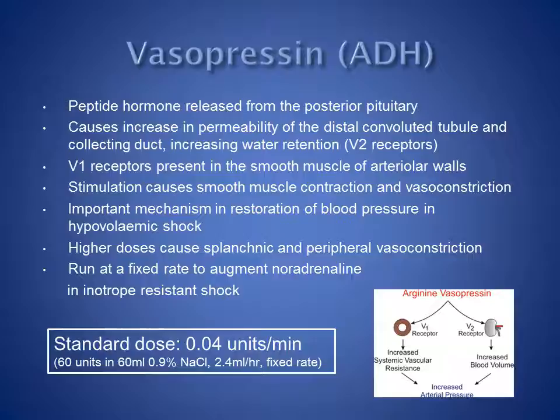Vasopressin is an important mediator in the restoration of blood pressure in hypovolemic shock. Higher doses of vasopressin cause splanchnic and peripheral vasoconstriction, and vasopressin is sometimes used as a treatment for bleeding esophageal varices. In patients with sepsis, vasopressin is used to augment noradrenaline in patients who are responding poorly to it.